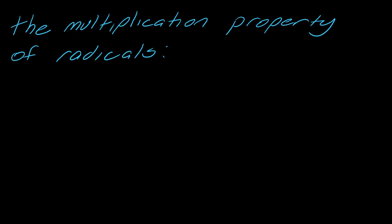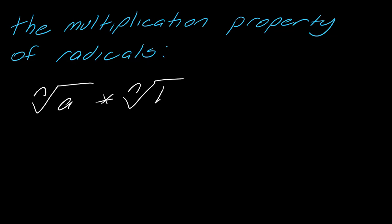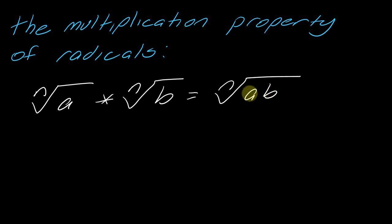So where we're going to start in this video is just talking about the multiplication property of radicals. So basically, if I have the nth root of a times the nth root of b, you can multiply these two things together just by doing a times b. As long as they have the same index, you are totally allowed to multiply these two things together.